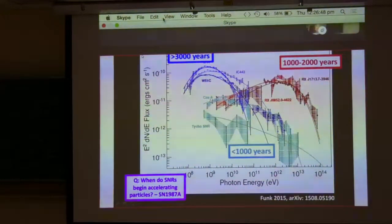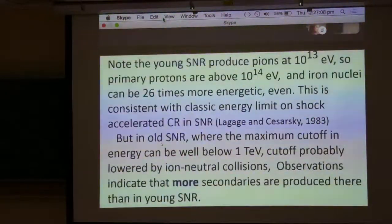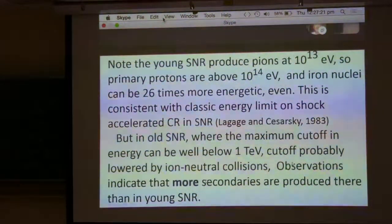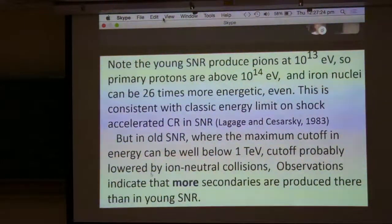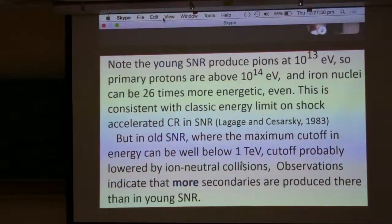So again, the young supernova remnants produce primary protons above 10 to the 14th eV. The iron nuclei can be even 26 times more energy, and this is consistent with the classical energy for shock accelerated cosmic rays in the supernova. But in all supernova remnants, the maximum cutoff is typically well below a PeV, almost certainly lowered by ion-neutral collisions, and observations indicate that more secondaries are produced there than the young supernova remnants. So we have to take these very modest high energy cutoffs seriously in calculating the cosmic ray spectra, especially for secondaries.